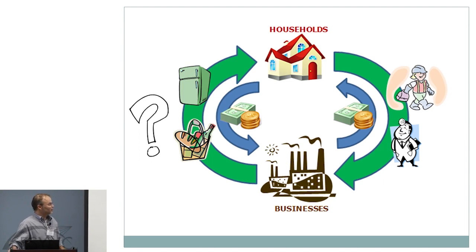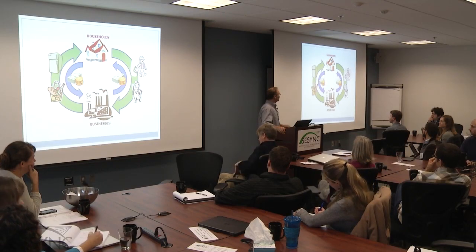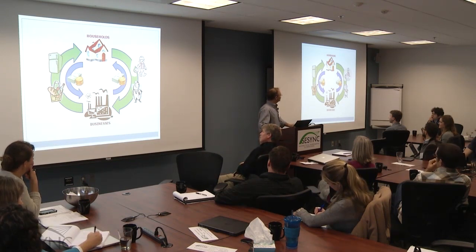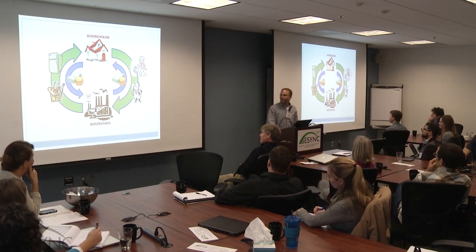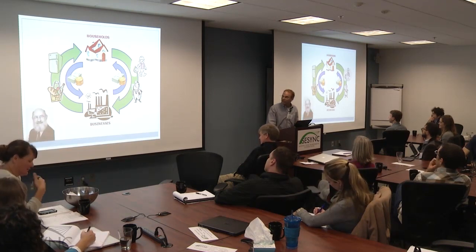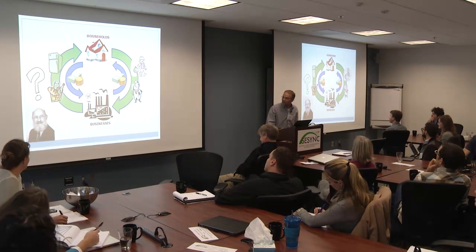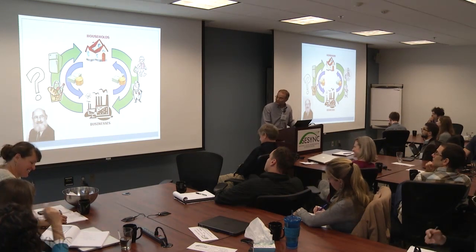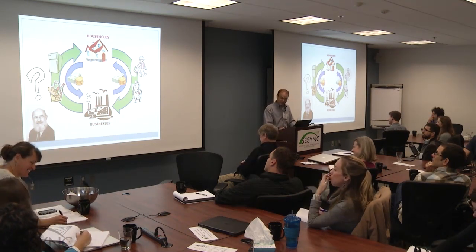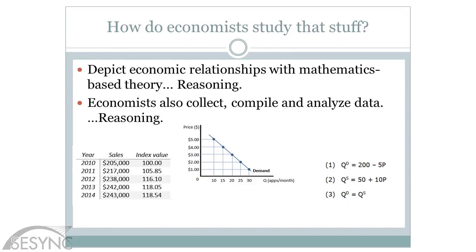Maybe there's something missing from that picture — where are the natural systems in this system? You can expand the circular flow to include that. There's John Crotilla in the corner wondering if we should reconsider some of this. How do economists study all that? Math, statistics, data, reasoning — we use a lot of tools.